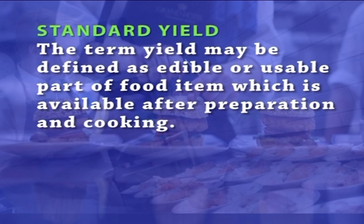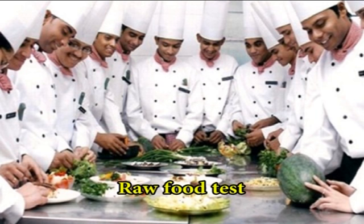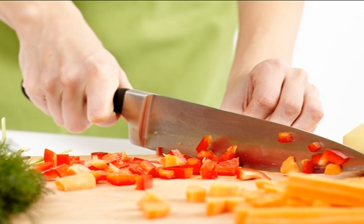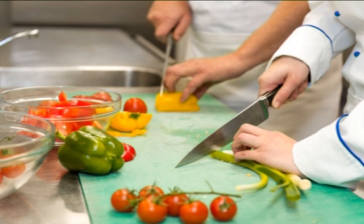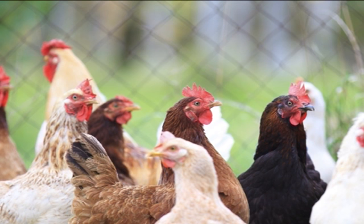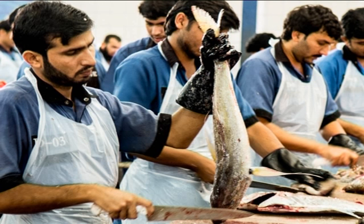Standard yield. The term yield may be defined as the edible or usable part of a food item which is available after preparation and cooking. To arrive at the standard yield, tests on food are conducted: raw food tests to determine the count and weight for vegetables and fruits used after wastes and cuttings are removed for specific uses, and butchering tests to fix the actual costs of meat, poultry and fish after waste and trimmings have been considered. Once the standard yield is fixed for different food items used, the performance of the kitchen can be measured.